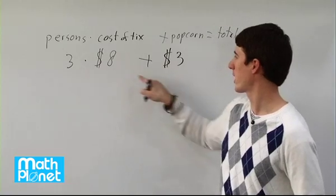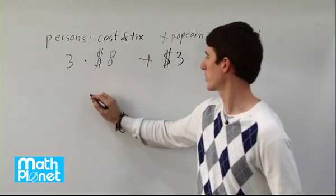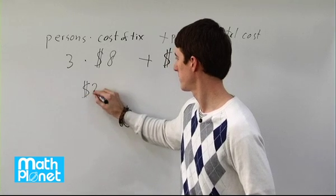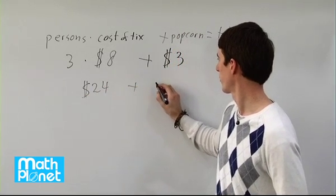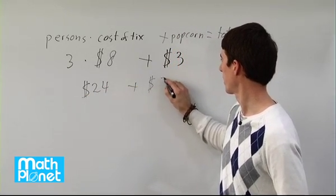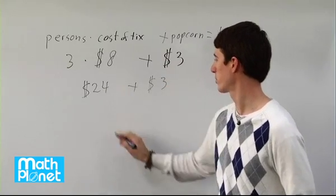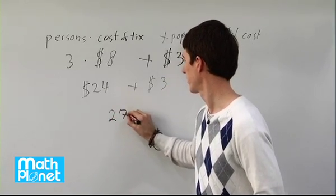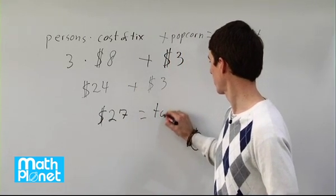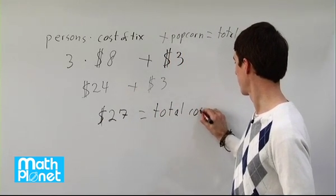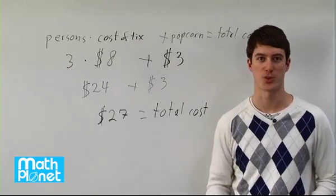So we need to multiply this out and then we can add these two terms together. 8 times 3 is $24. So $24 plus $3, that gives us our final answer. So 24 plus 3 is $27. So the total cost to go to the movies with a little bit of popcorn is $27.